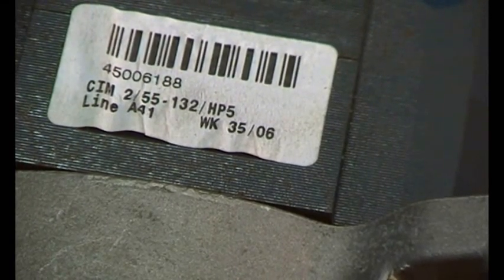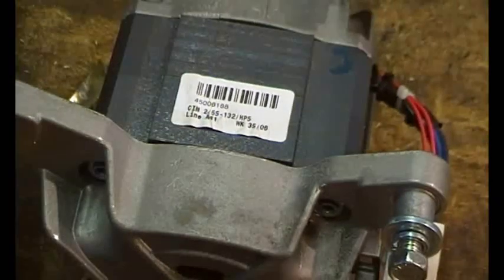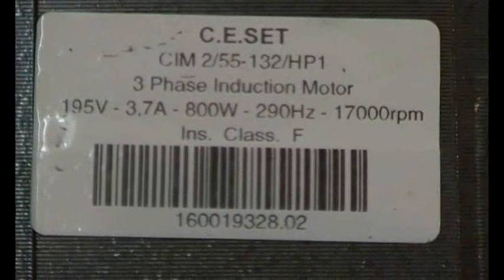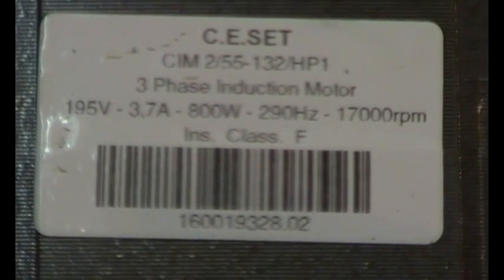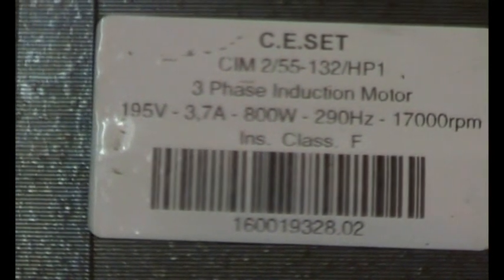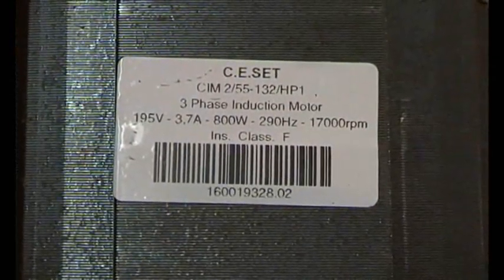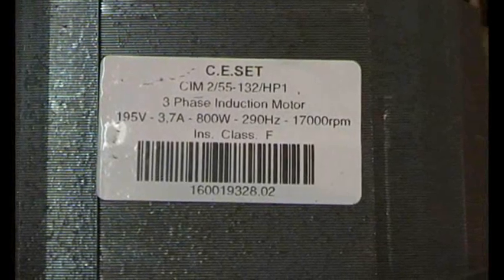The next thing is 2006, okay, so it's not that modern because it's 2018 now. So let's have a look at the other label. Here's the other label: 195 volts, come on focus properly, 3.7 amps, 800 watts.